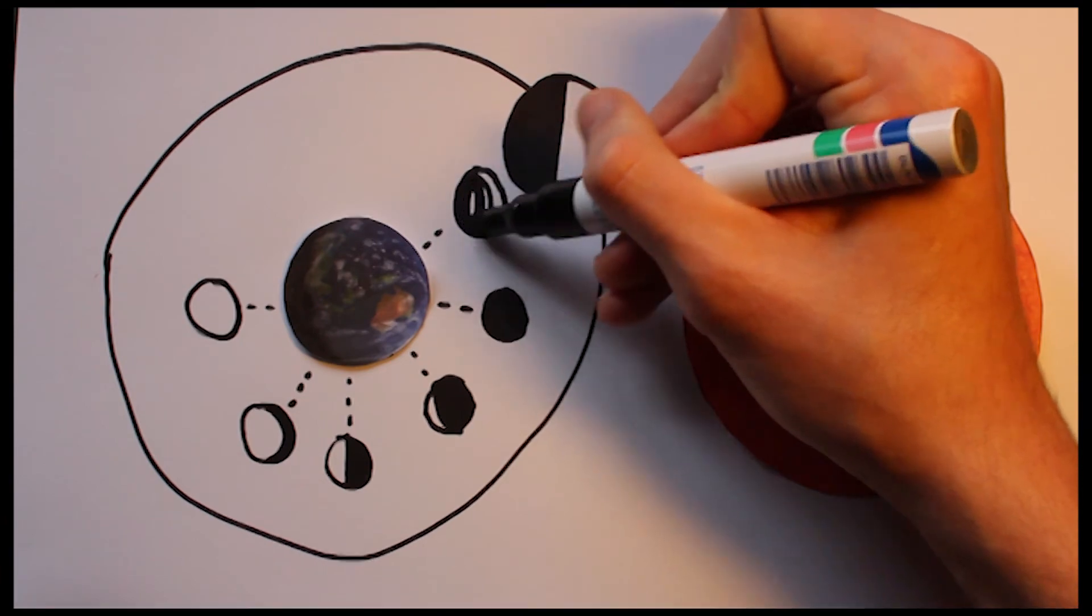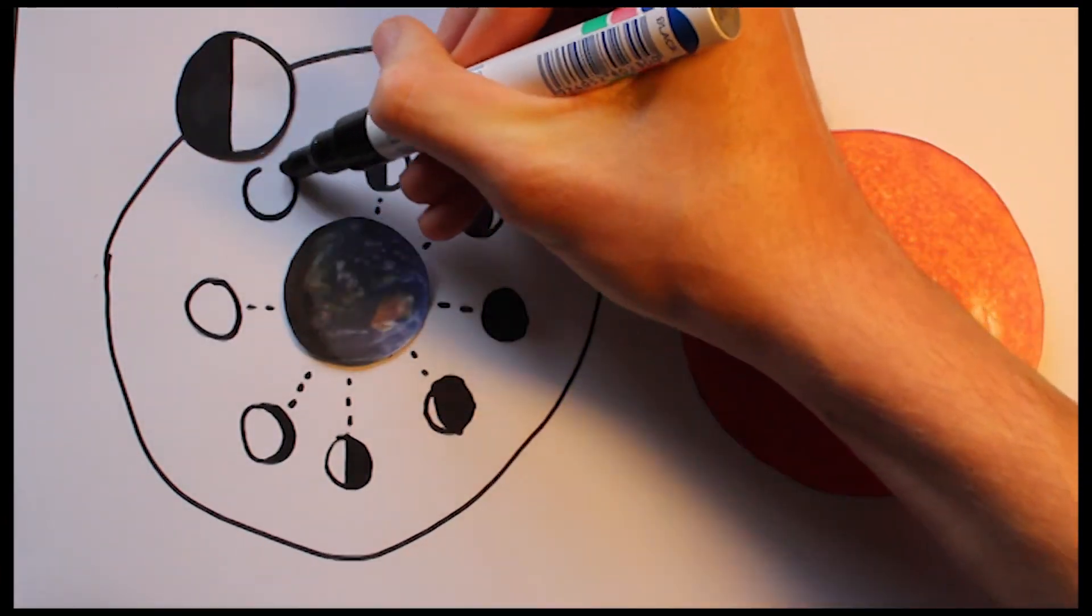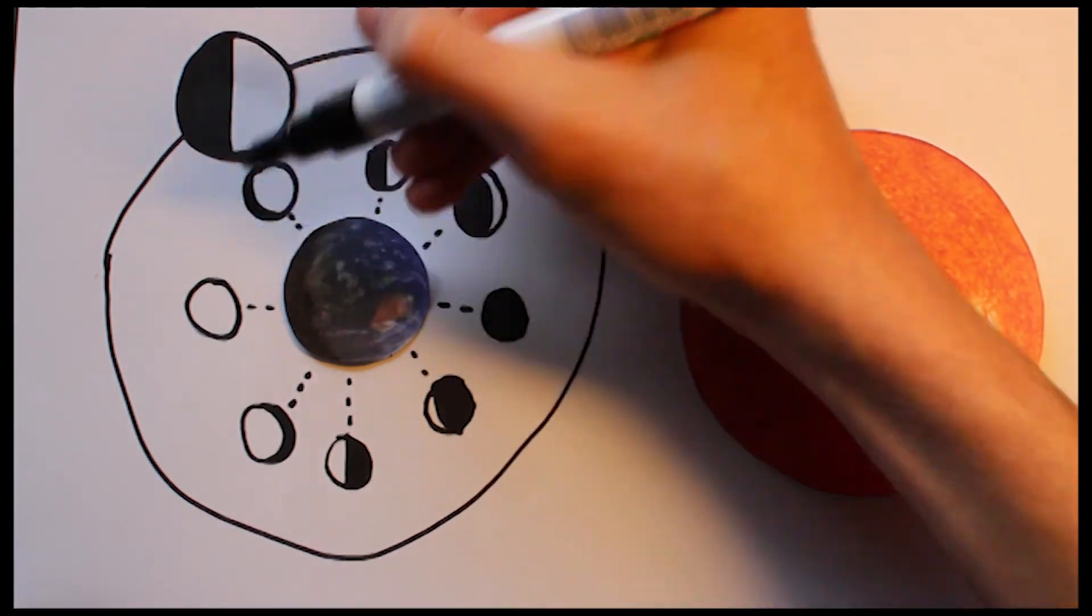After the new Moon, the Moon continues its orbit and rotation, fulfilling each phase to an Earth observer, until eventually coming back to appearing full.